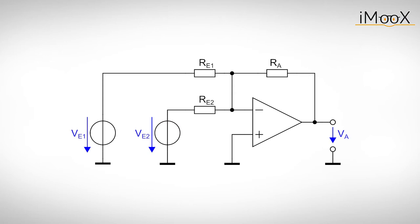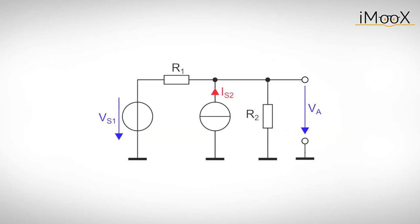As you can see this circuit is very similar to the inverting amplifier we just talked about. We just added another input resistor Re2. Since there are two input voltages now we apply the superposition principle. The superposition principle analyzes the impact of each individual voltage and current source on the output voltage.